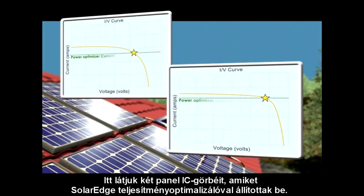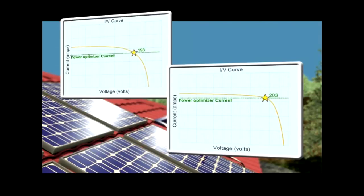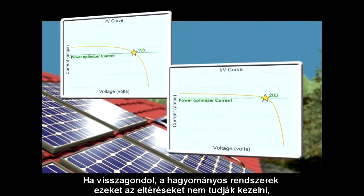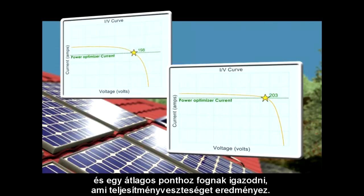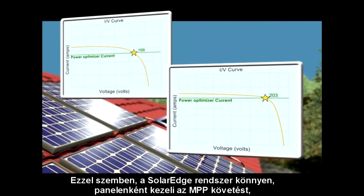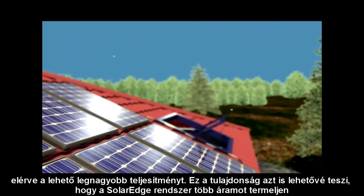Here we see the IV curves of two solar panels fitted with SolarEdge power boxes. You can see that the MPP point is different for each panel. As you recall, traditional systems cannot handle this mismatch and will adjust to an average point, resulting in power losses. In contrast, the SolarEdge system easily manages MPP tracking individually for each panel, harvesting the optimal available power.